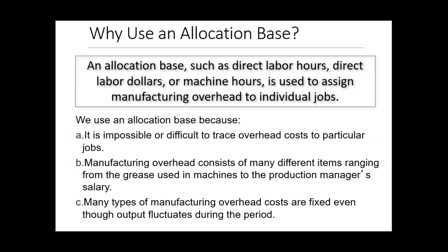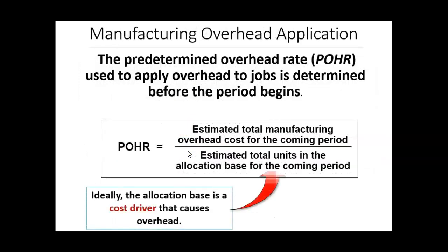With the allocation base, we assign costs to each individual job. The formula to determine the POHR — the Predetermined Overhead Rate — uses the estimated total manufacturing overhead costs for the coming period divided by the estimated total units in the allocation base.